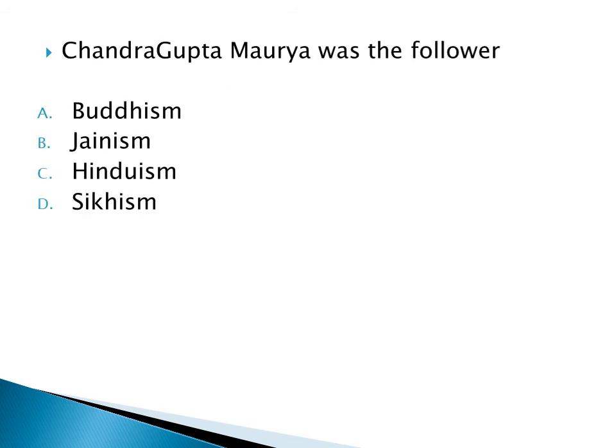What was the capital of the Mauryan Empire? Option A: Pataliputra, Option B: Lumbini, Option C: Kandar, Option D: Girnar. The right answer is Option A: Pataliputra.